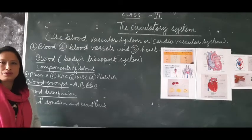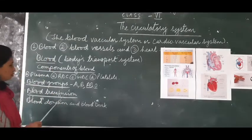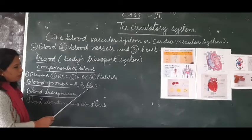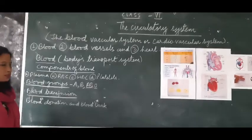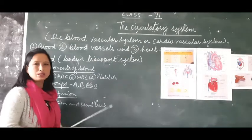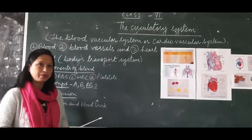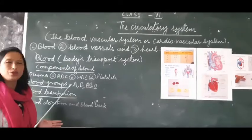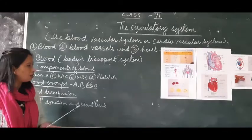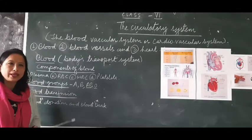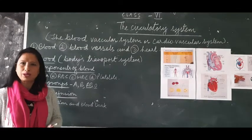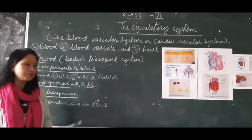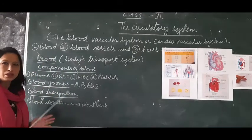There are four blood groups: A, B, AB, and O. Blood group AB is called the universal recipient, and blood group O is called the universal donor. People with blood group AB can receive blood from all groups, and people with blood group O can donate blood to everyone.